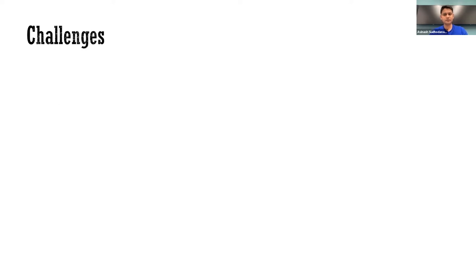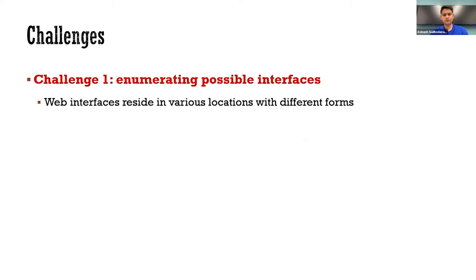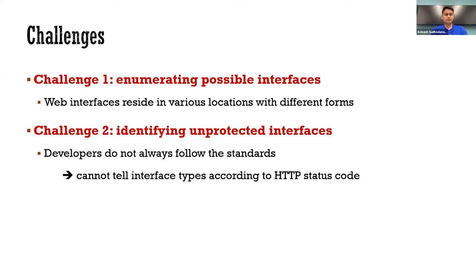Implementing the design is not straightforward. We encountered several challenges. The first challenge is how to enumerate all possible interfaces, given that the web interfaces reside in various locations with different forms in the firmware image. The second challenge is how to identify unprotected interfaces from all interfaces, as developers do not always follow the standard way of implementation, so we cannot tell the type of interfaces based on HTTP status code.